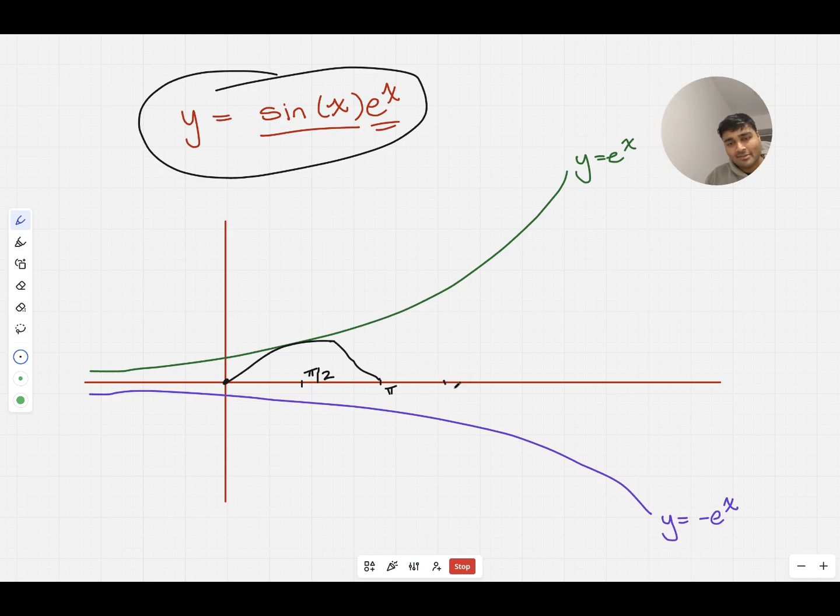What I'm going to next do is consider what happens at 3π by 2. And I know that the y value, sine of x is going to be minus 1. And so the y value is going to be negative e to the 3π by 2, which is going to be on this blue curve. And so it's going to look something like this. And again, it will touch just there and come back up.